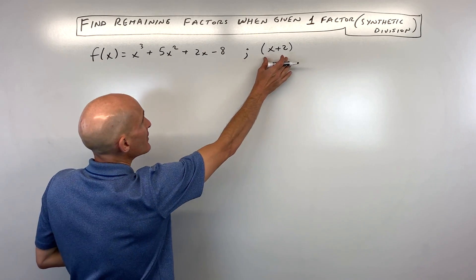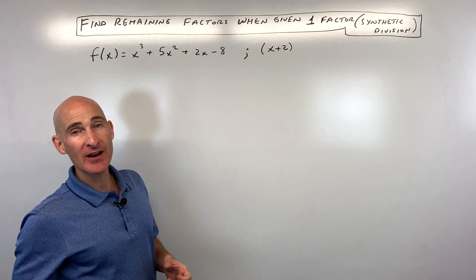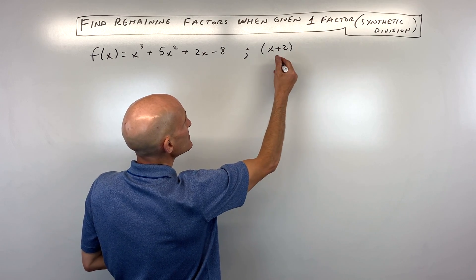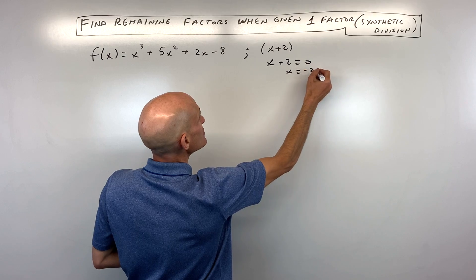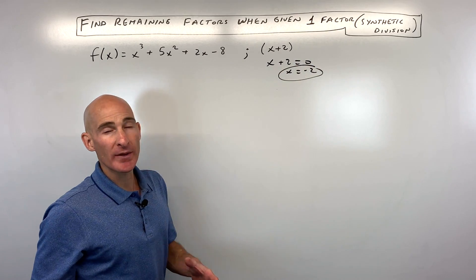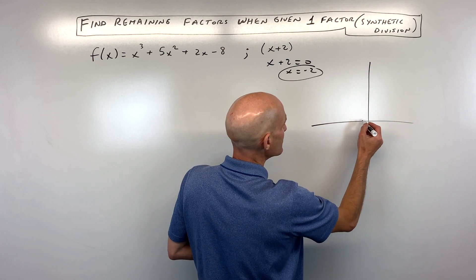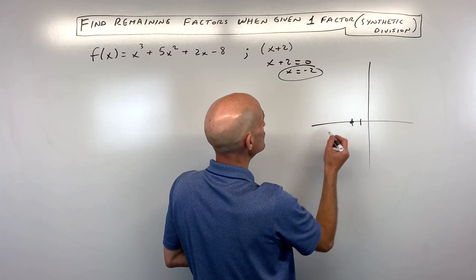Now, when a factor divides into a polynomial without any remainder, that means that if you were to set this equal to 0, x + 2 = 0, you get x = -2. Negative 2 is a zero. What that means is it's going to cross the x-axis when you graph this polynomial at negative 2.